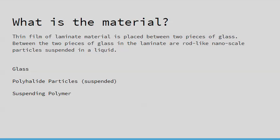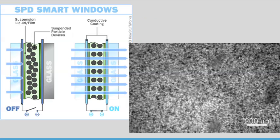The opposite is true if the electricity is turned off. This picture gives a better visual representation of what we're talking about. On the left picture, you can see there's no current and the particles are in a random order, which blocks the light. When a current is applied, it allows the light to pass through. The bottom right picture is a real close-up of what those particles look like, showing that random assortment.